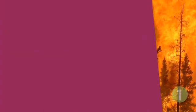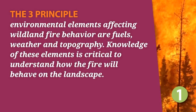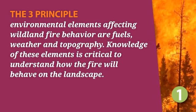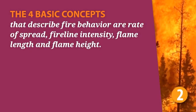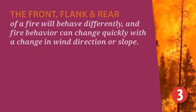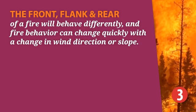And now, let's review. 1. The three principal environmental elements affecting wildland fire behavior are fuels, weather, and topography. Knowledge of these elements is critical to understanding how a fire will behave on the landscape. 2. The four basic measures that describe fire behavior are rate of spread, fire line intensity, flame length, and flame height. 3. The front, flank, and rear of a fire behave differently, and fire behavior can change quickly with a change in wind direction or slope.